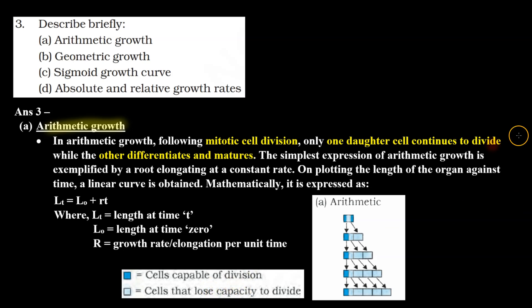If we look at arithmetic growth, here we showed 3 cells in which 2 cells had division capacity and 1 cell did not. The rightmost cell didn't have division capacity. The left cell has the ability to divide via mitotic division and made 2 new cells — one cell had the capacity of division and the other showed further differentiation. Similarly, the next generation will continue this pattern.